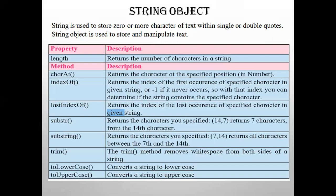Now let's take a look at the properties and methods. In this table there is only one property; the methods are many. The only property is `length`. This property returns the number of characters in the string — that is, it returns the length of the string. The length of an empty string is zero, and this property does not accept any parameter.